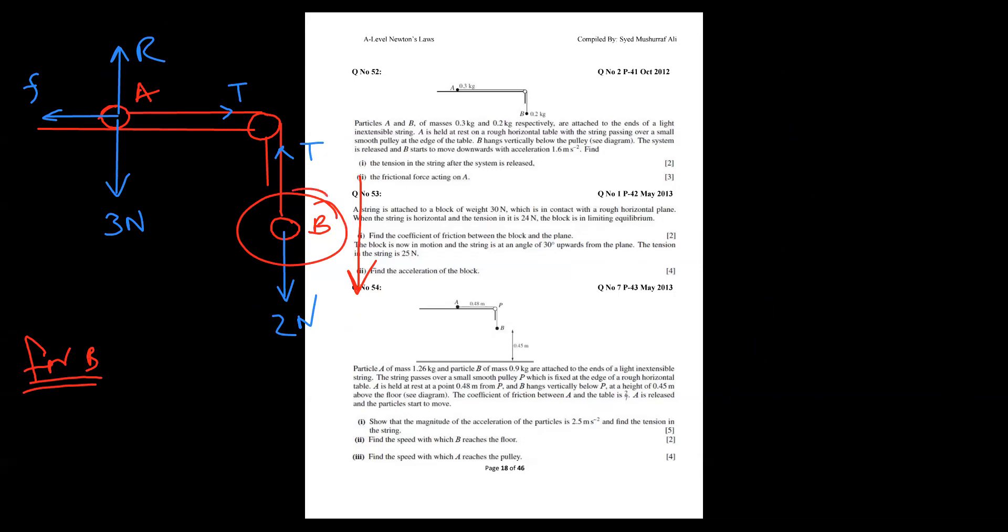I am talking about only particle B, so my attention is only particle B. Let's start. Formula is net force equals ma. For ma, because the system is in motion, let me write here 'motion'. The particle is moving downward and 2 is bigger, tension smaller.